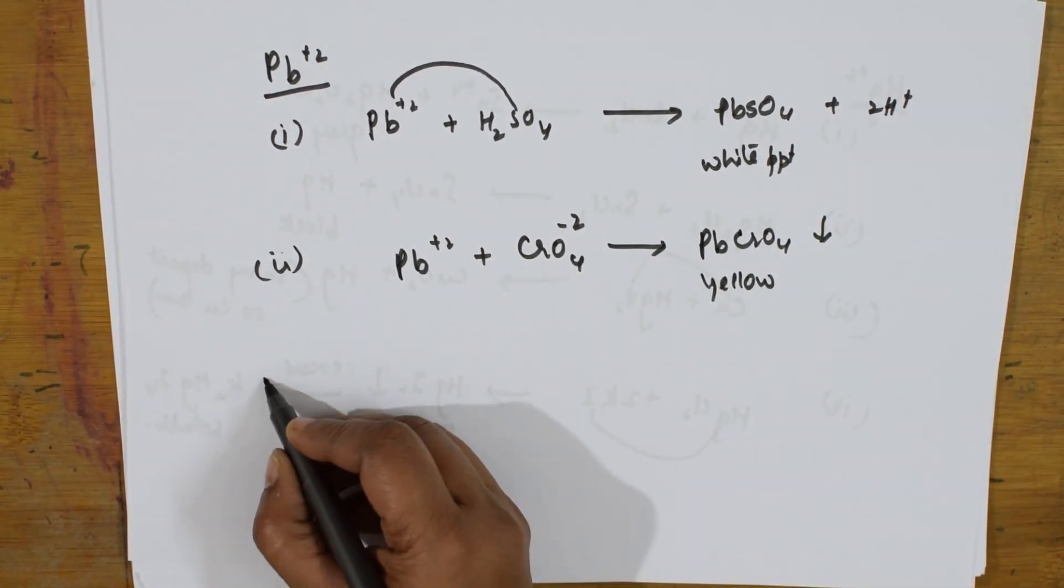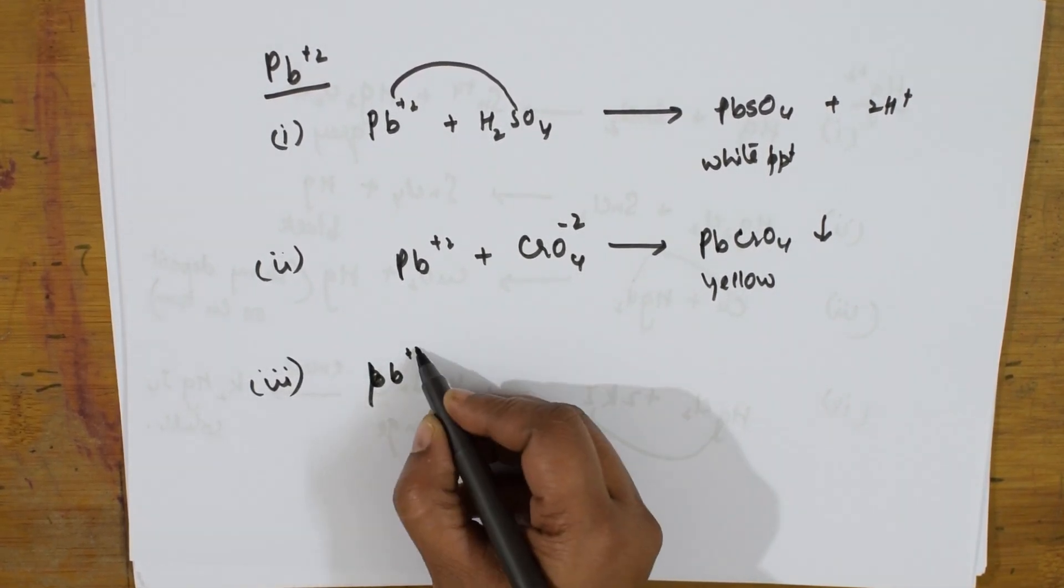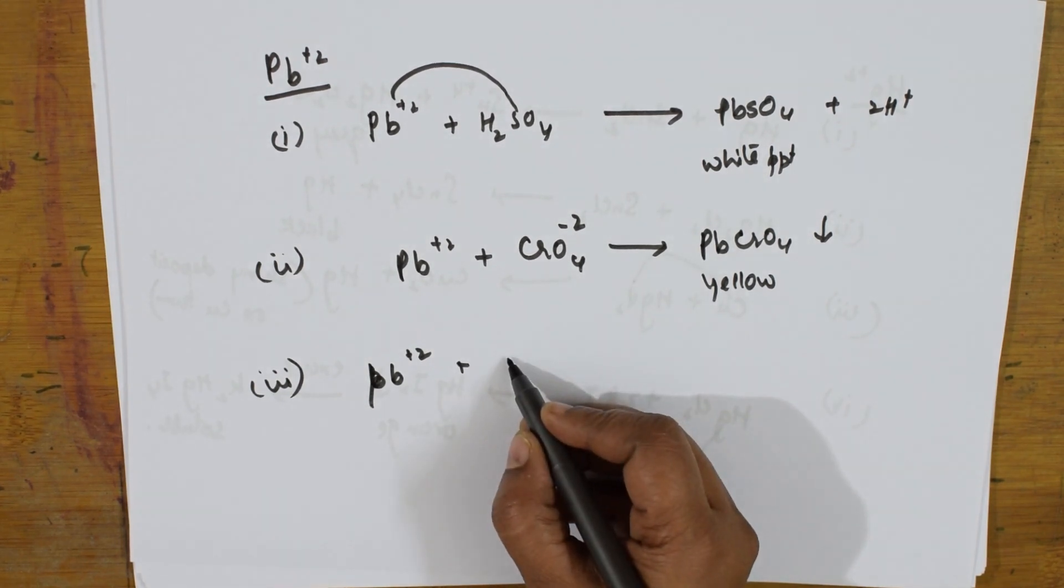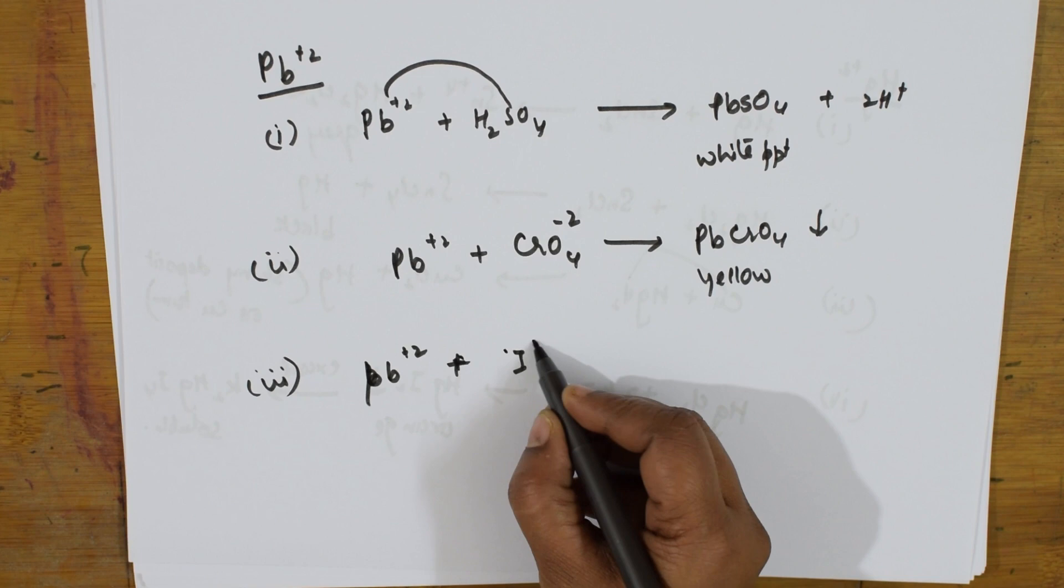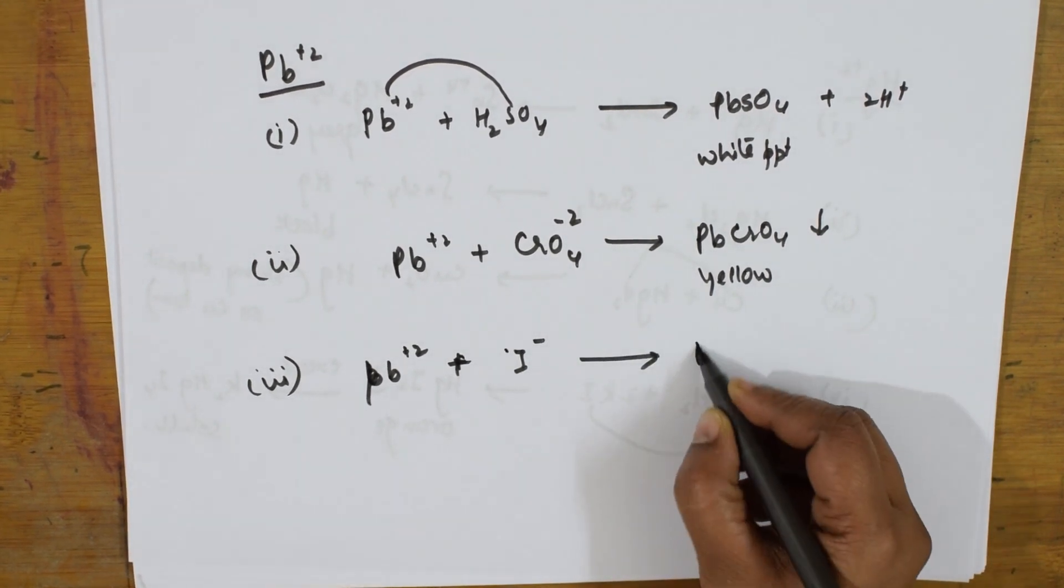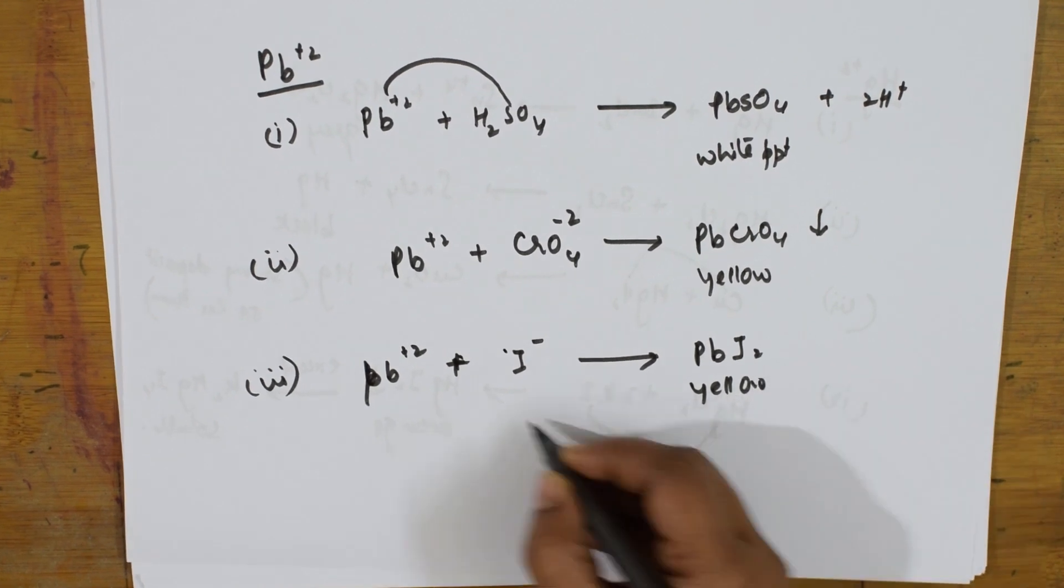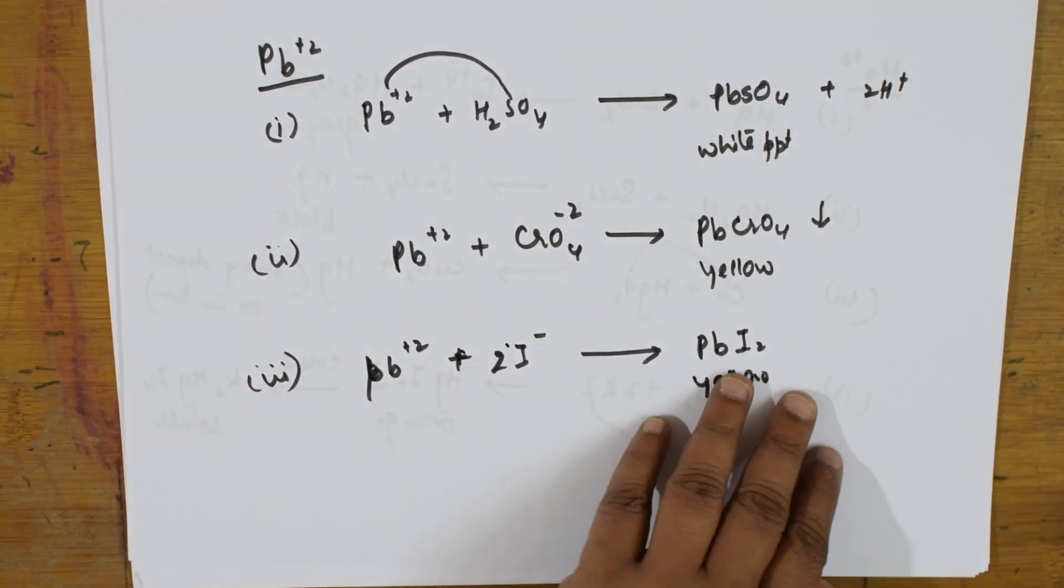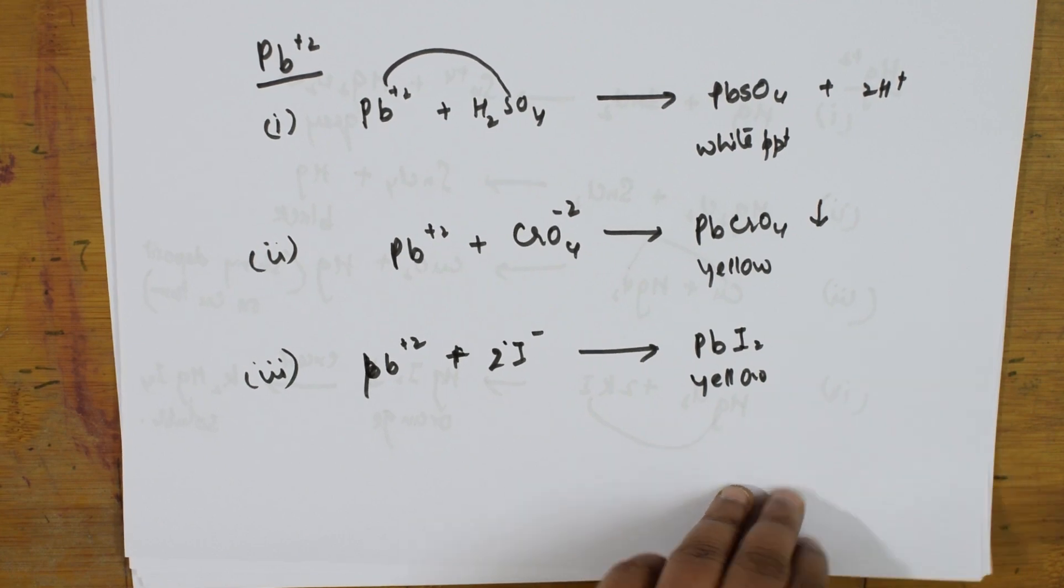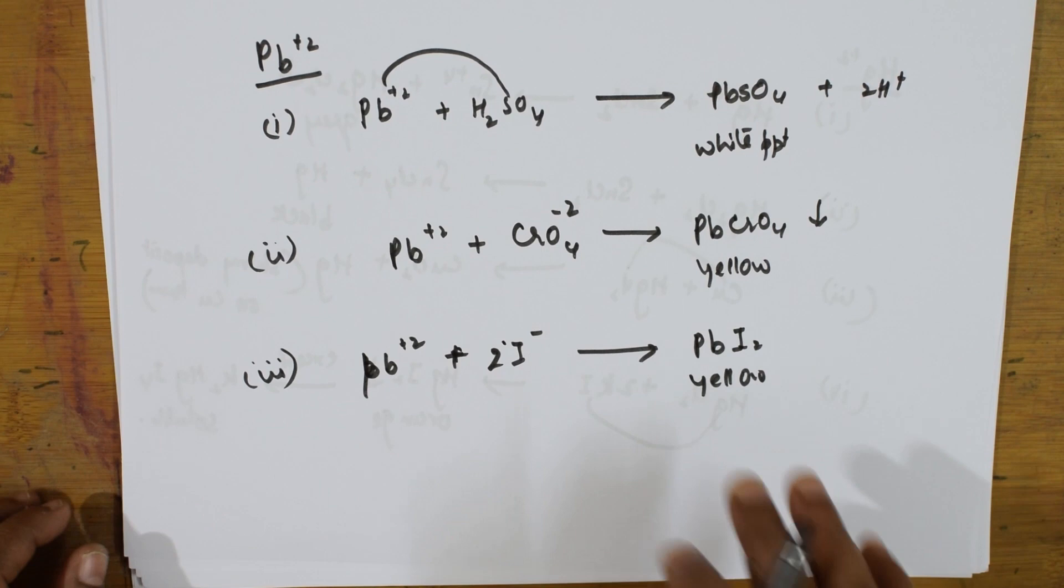You can also take lead, this Pb salt and add potassium iodide. You will be getting a yellow PPT of lead iodide. Why am I writing all this? Because these are the viva equations which your teacher will be asking you. You have to be very careful with the viva equation. What is yellow PPT due to? What is the white PPT due to? This is where you will be given marks for.